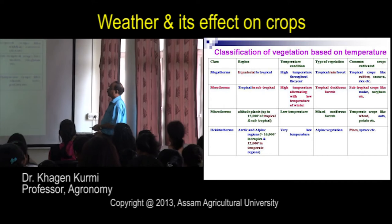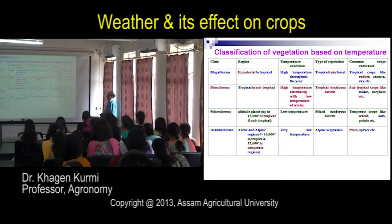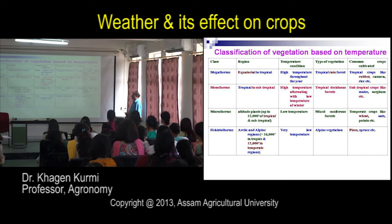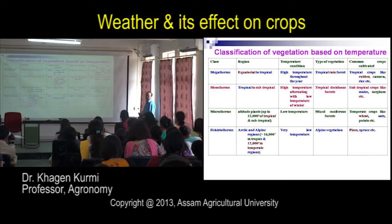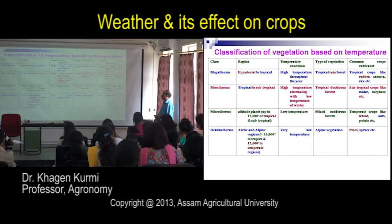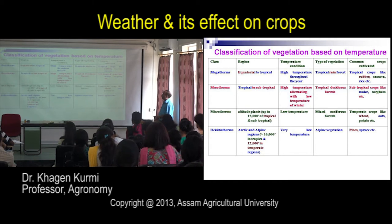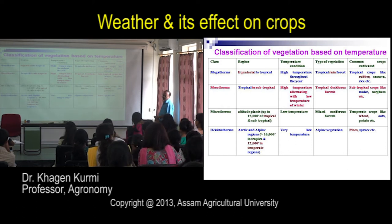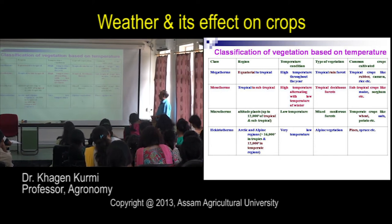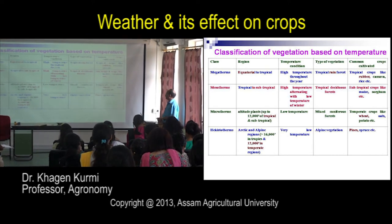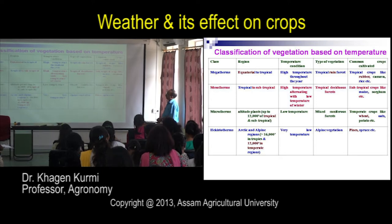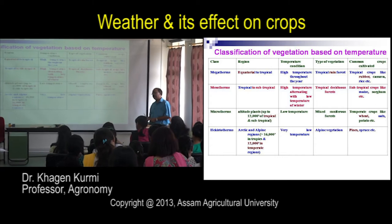The last group is Hekistotherms, found in Arctic and Alpine regions — very near to the polar region. At altitudes above 16,000 feet in tropics and 12,000 feet in temperate regions, very low temperatures prevail and Alpine vegetation such as pines and spruce are found. Temperate fruits are difficult to grow here; generally only Alpine-type vegetation is found. According to temperature variation, these are the four classifications of vegetation.